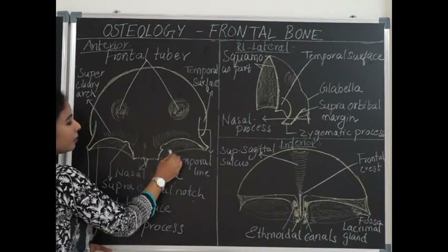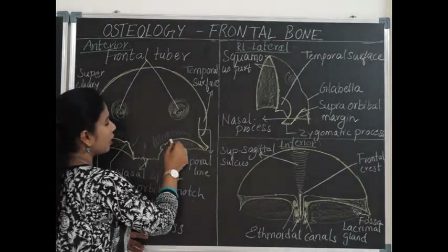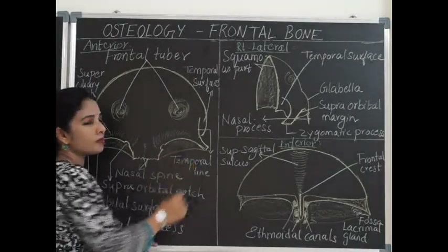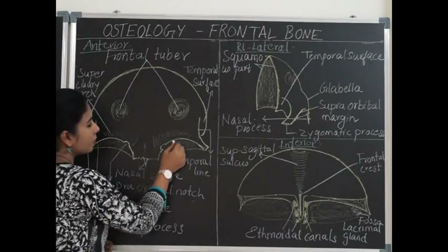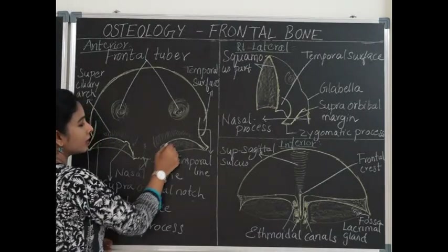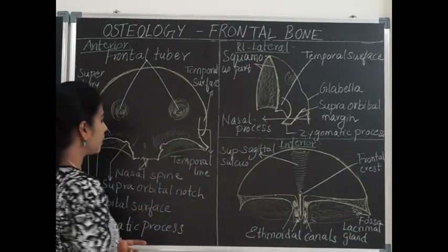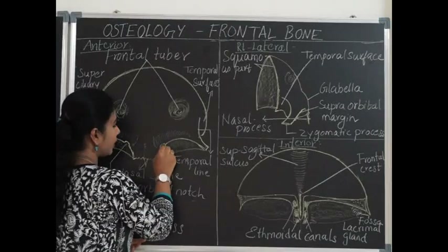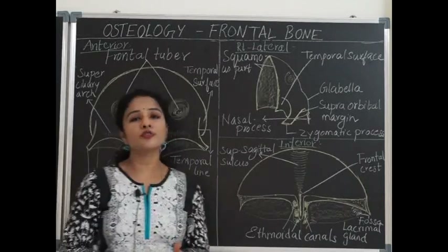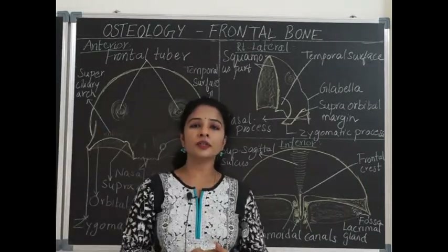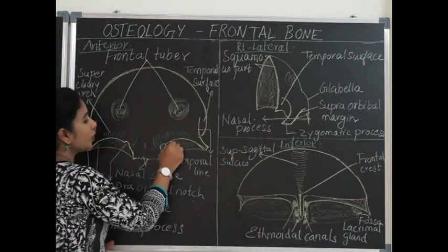The squamous and orbital parts are separated by a margin called the supraorbital margin, which forms the margin of the bony orbit. At the junction of the medial one-third and lateral two-thirds, there is a notch called the supraorbital notch — sometimes a separate foramen called the supraorbital foramen. Structures passing through include the supraorbital vessels and nerves.